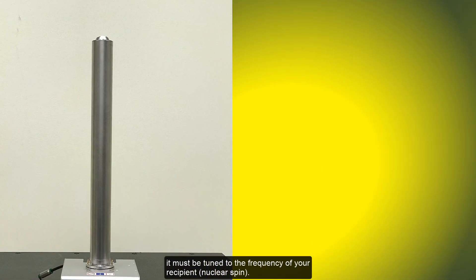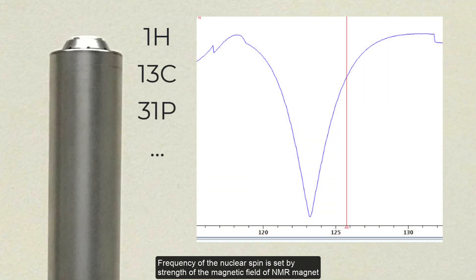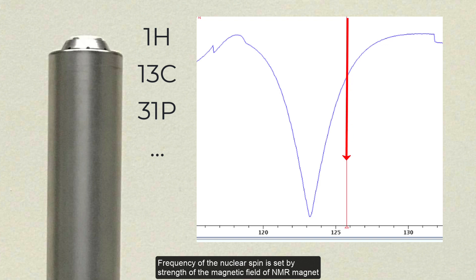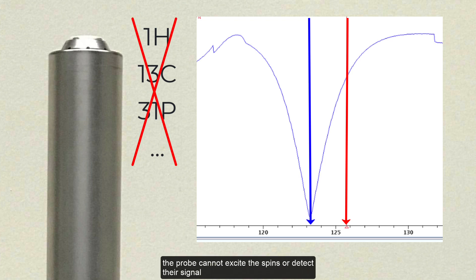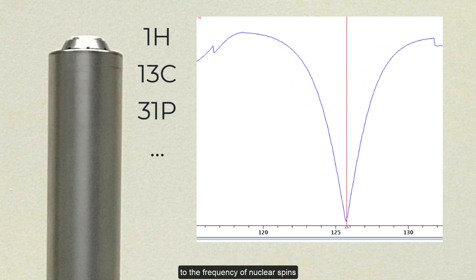As with any antenna, it must be tuned to the frequency of your recipient, a nuclear spin. Frequency of the nuclear spin is set by strength of the magnetic field of an MR magnet. If the probe coil resonates at wrong frequency, the probe cannot excite the spins or detect their signal. We tune the probe coils to shift their resonance frequency to the frequency of nuclear spins.